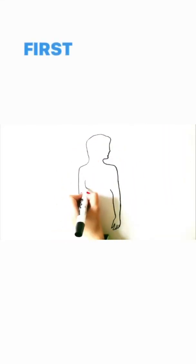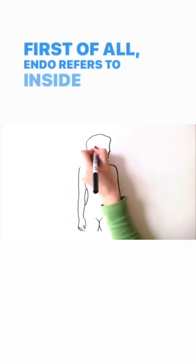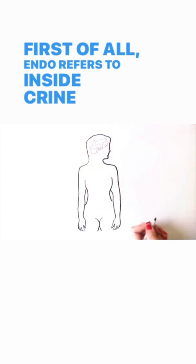What is the endocrine system? First of all, endo refers to inside, crine means to secrete.